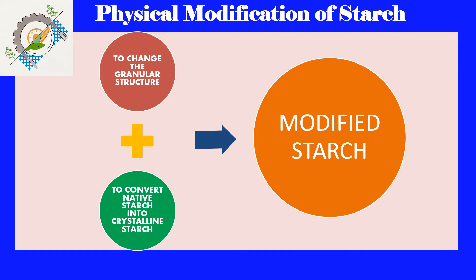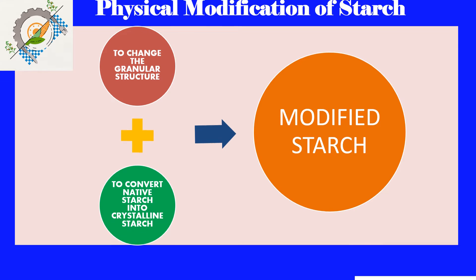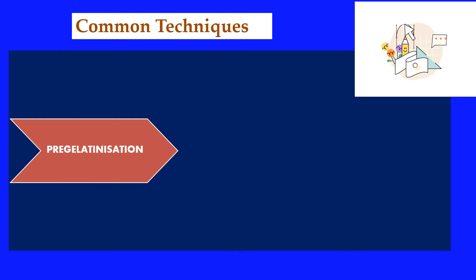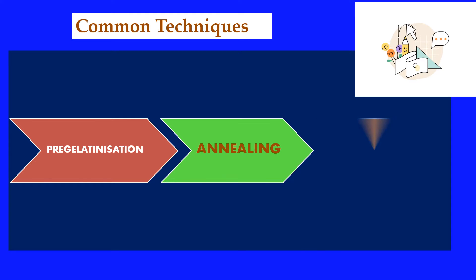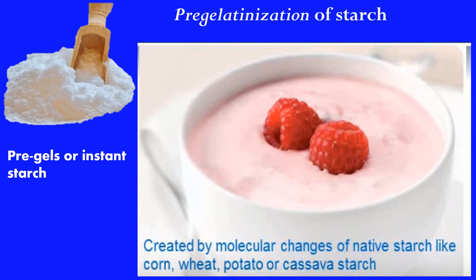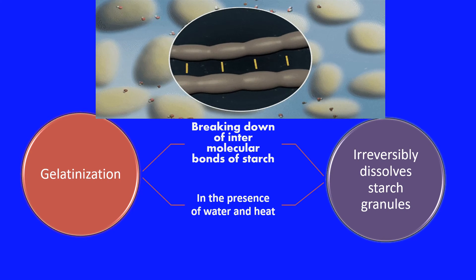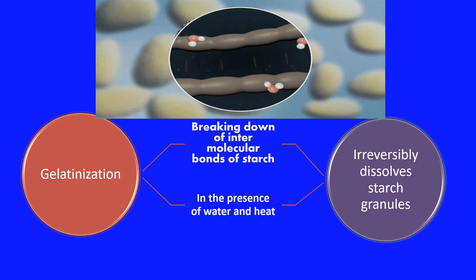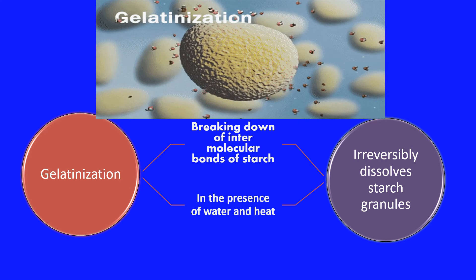The first technique for modification of starch is by physical means, in order to change the granular structure of the starch molecules as well as to convert native starch into crystalline starch. Common techniques include pre-gelatinization, followed by annealing (that is, slow cooling), and then extrusion. Pre-gelatinization of starch results in what is referred to as pre-gels or instant starch, created by molecular changes of native starches like corn, wheat, potato, or cassava. Gelatinization involves breaking down the intermolecular bonds of starch in the presence of water and heat.